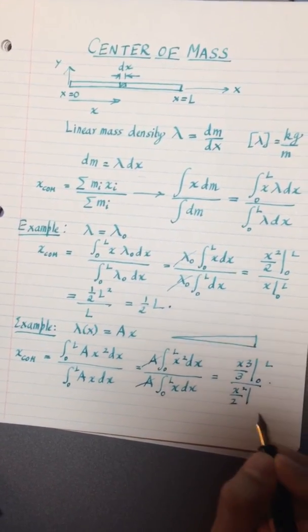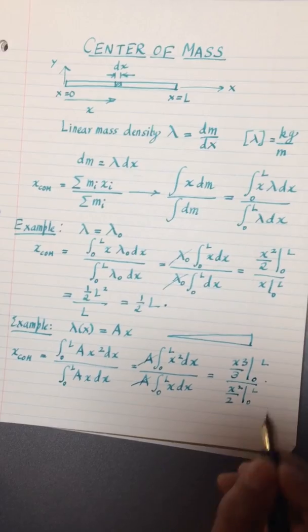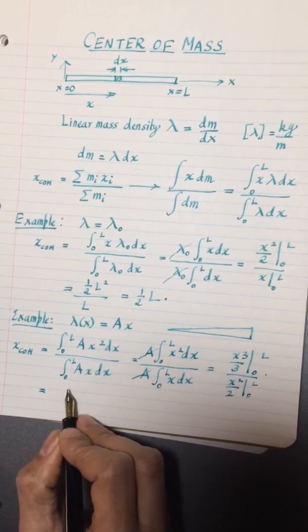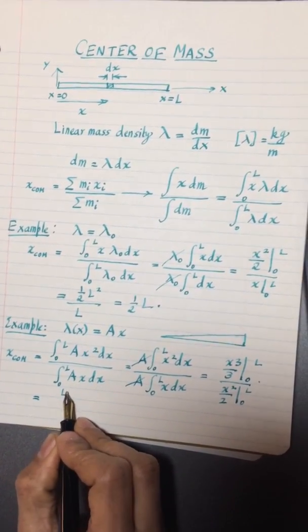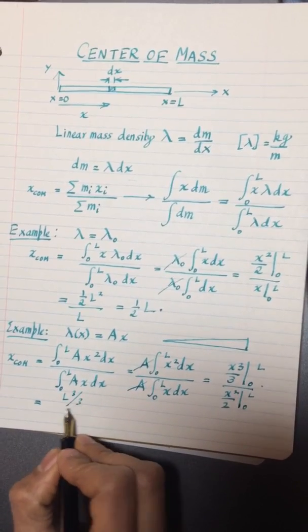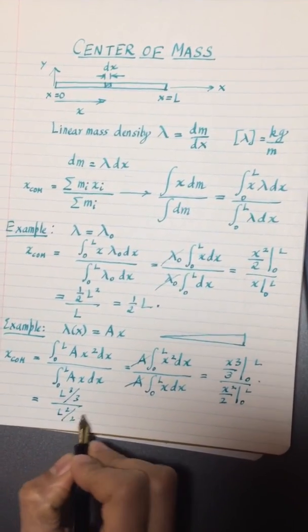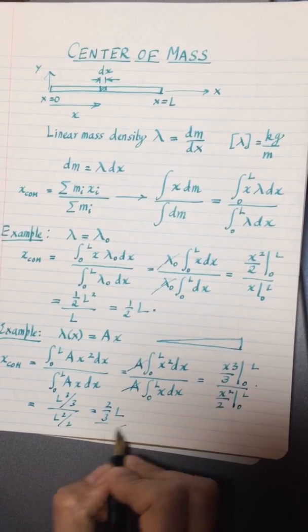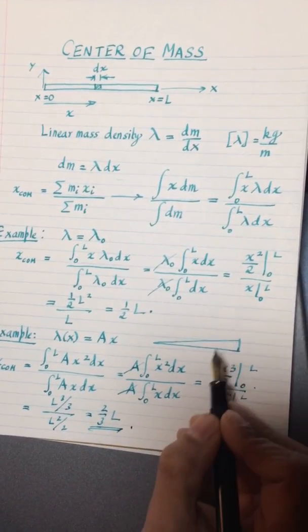And downstairs it's gonna be x squared over 2 from 0 to L. Let's try to evaluate that, that's gonna be L cubed over 3 over L squared over 2, and that's just two-thirds L. So as expected the center of mass of this rod is a little bit further out.